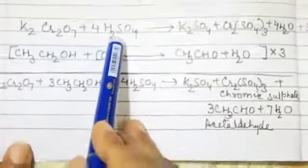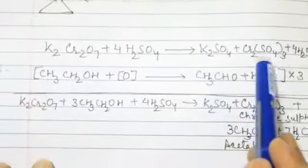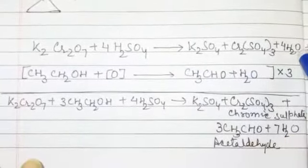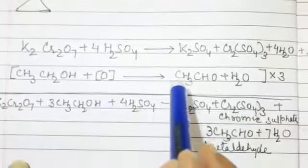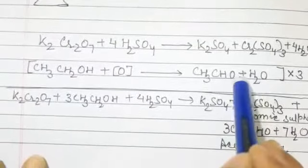When potassium chromate reacts with H2SO4, it forms potassium sulfate, chromic sulfate and water. Ethyl alcohol, when oxidized, forms aldehyde and water.